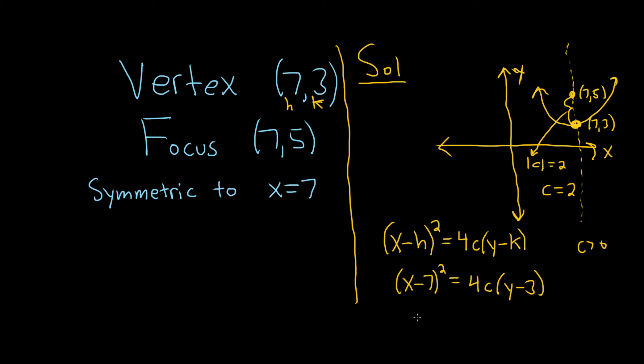So we have (x minus 7) squared equals 4 times 2, times (y minus 3).